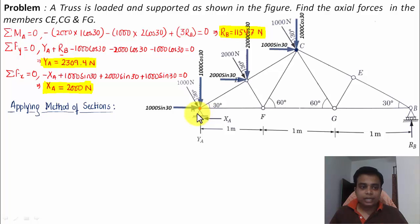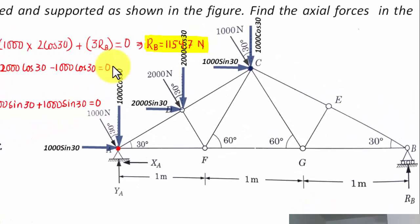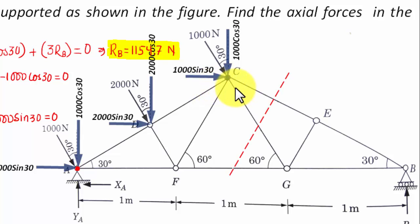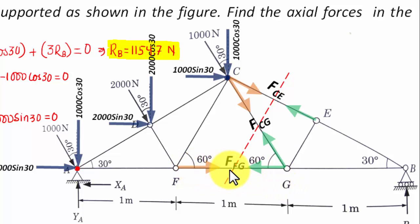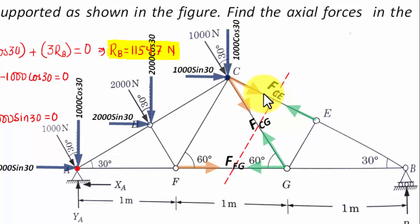For the method of sections, we make a cut passing through the three members CE, CG, and FG. The axial forces approaching the section are labeled FCE, FCG, and FFG. We have three unknown axial forces, and we'll use three equations of equilibrium to find them.